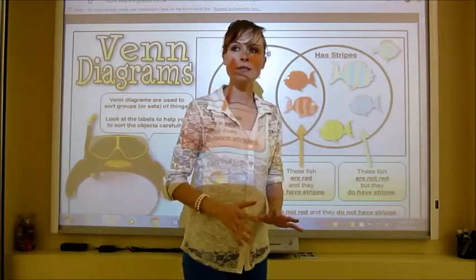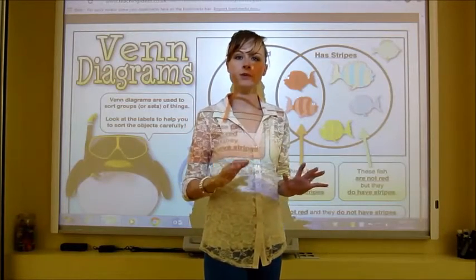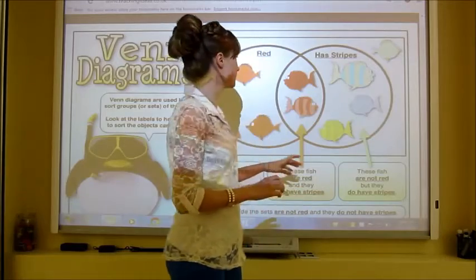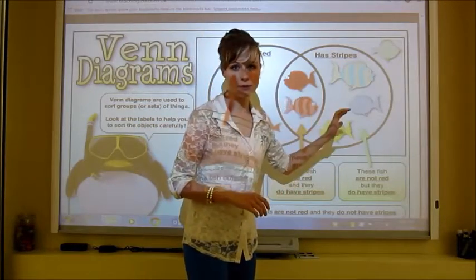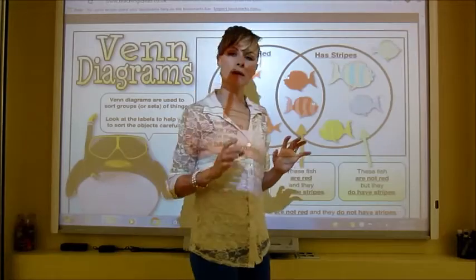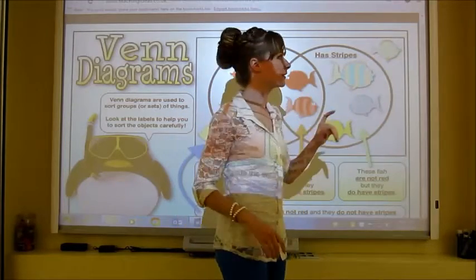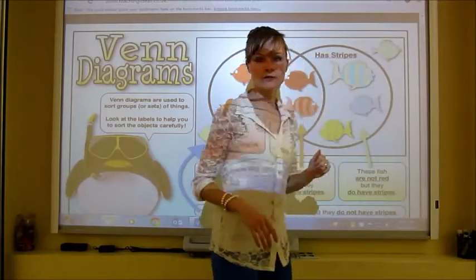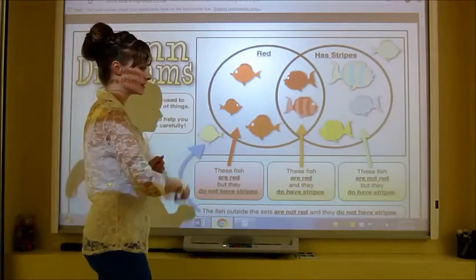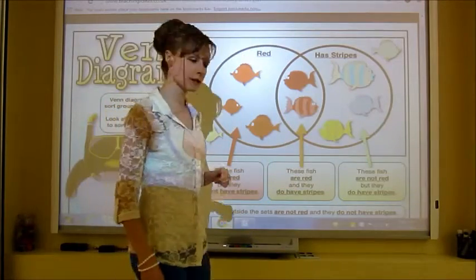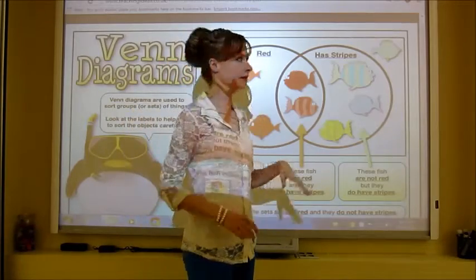The last part of the Venn diagram is for things that don't fit into either circle. So fish that are not red and also do not have stripes go on the outside of the diagram. In this case, there's a green fish and a yellow fish out there because neither fits either category.